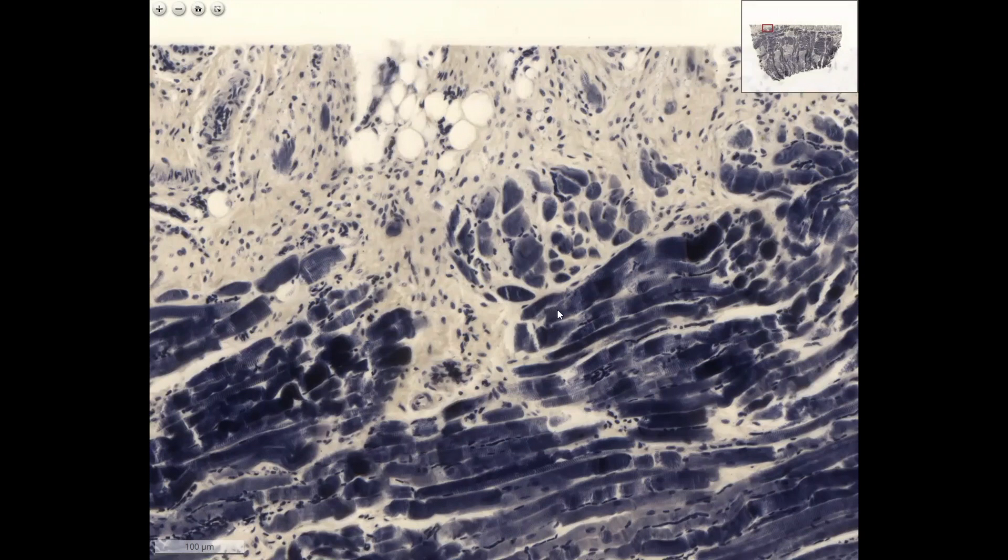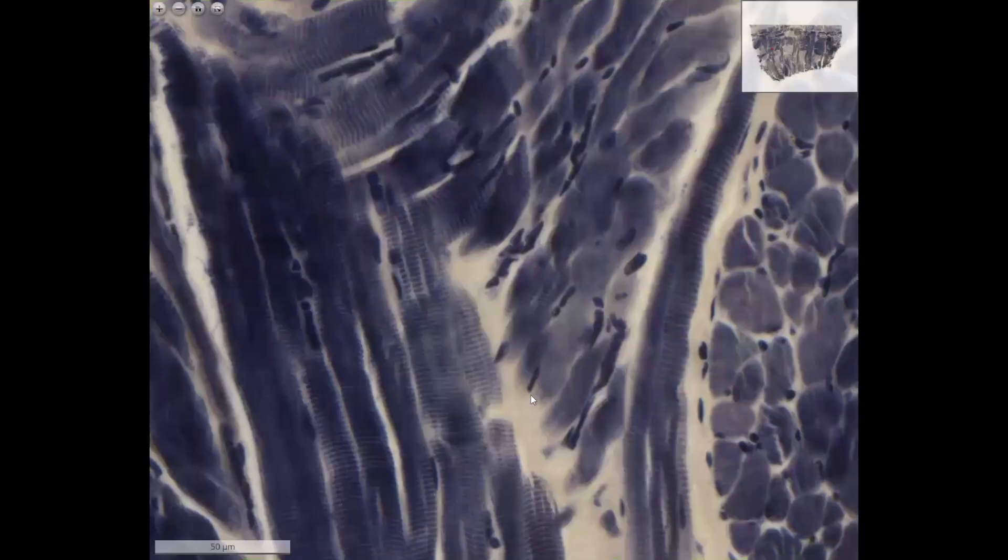The length of the skeletal muscle fiber, which is actually a multi-nucleated giant cell, may vary from a few millimeters to even 50-70 centimeters. The nuclei of the skeletal muscle cells are pressed to the side of the muscle cells. They are positioned right under the sarcolemma.